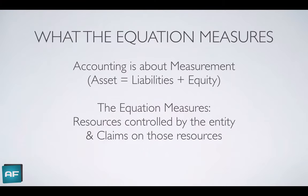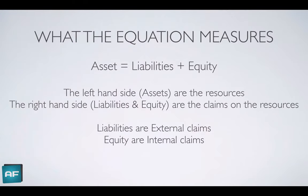So what does the equation measure? Accounting is about measurement, and the equation measures the resources controlled by the entity, as well as the claims on those resources. Assets are on the left-hand side — the resources of the entity. Liabilities and equity are on the right-hand side — the claims on those resources. Liabilities are the external claims, meaning claims from those outside the company or ownership structure. Equity represents the internal claims — what the owners of the business have on the assets.